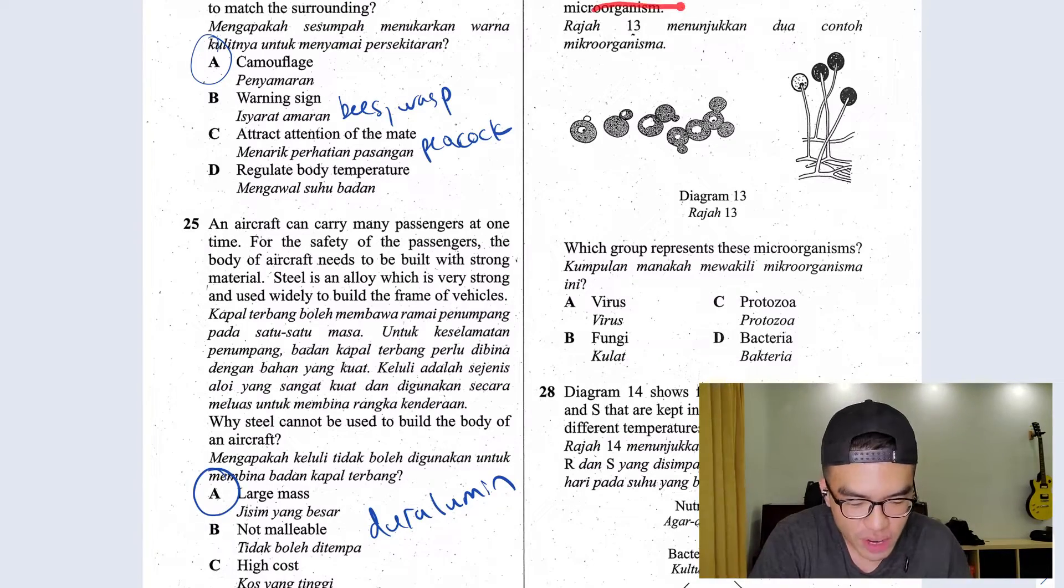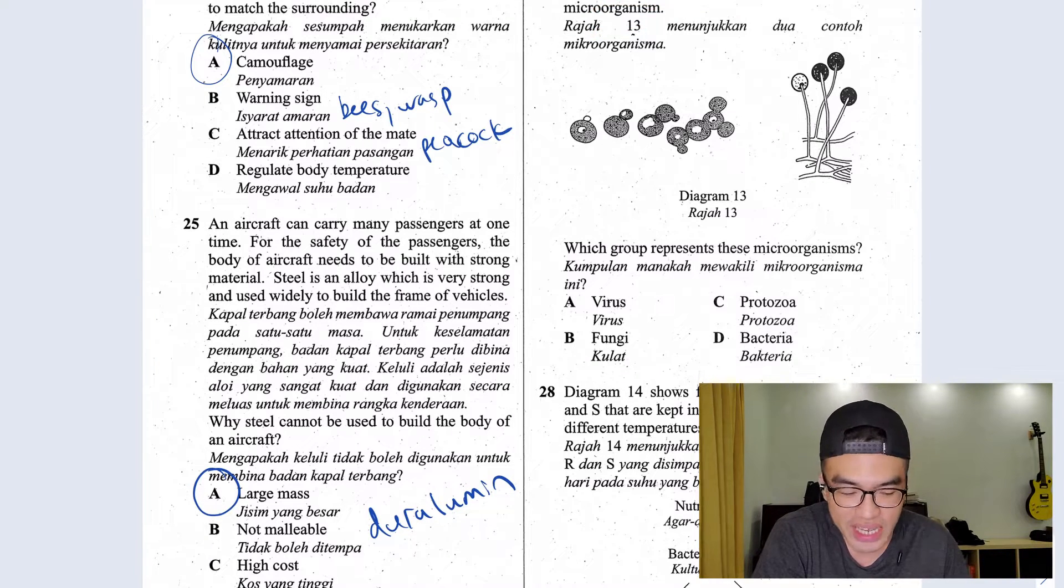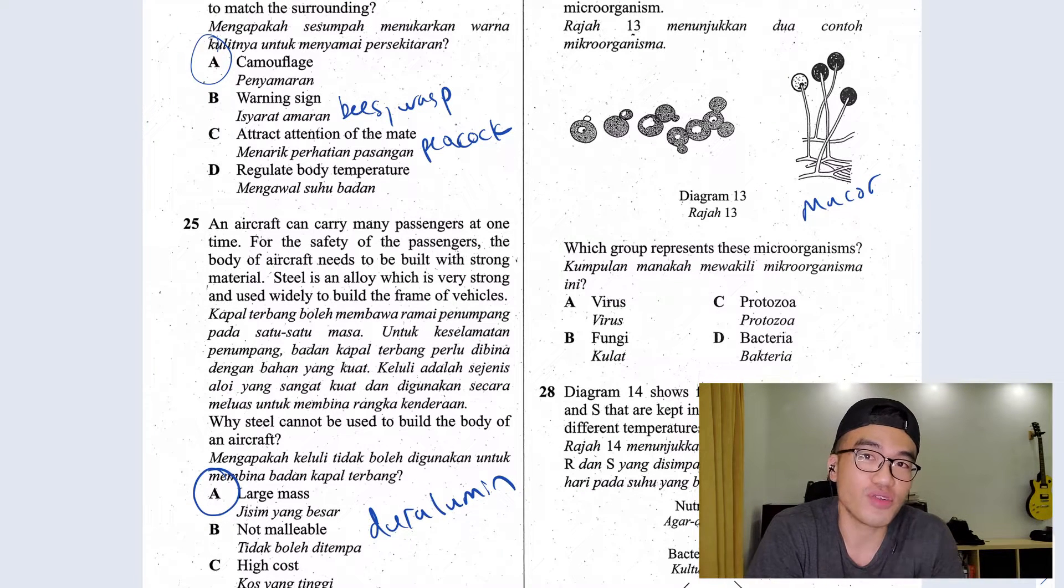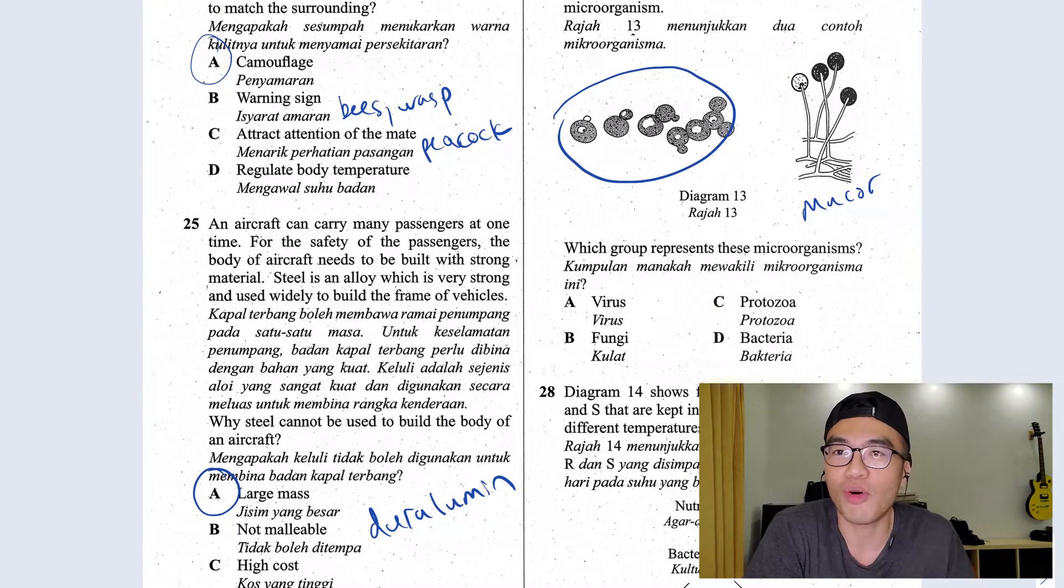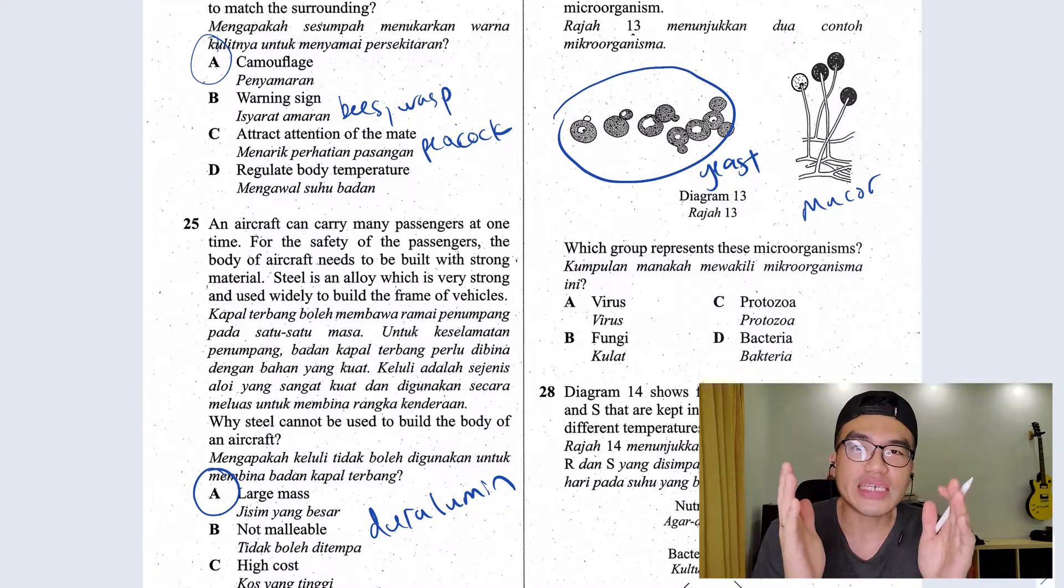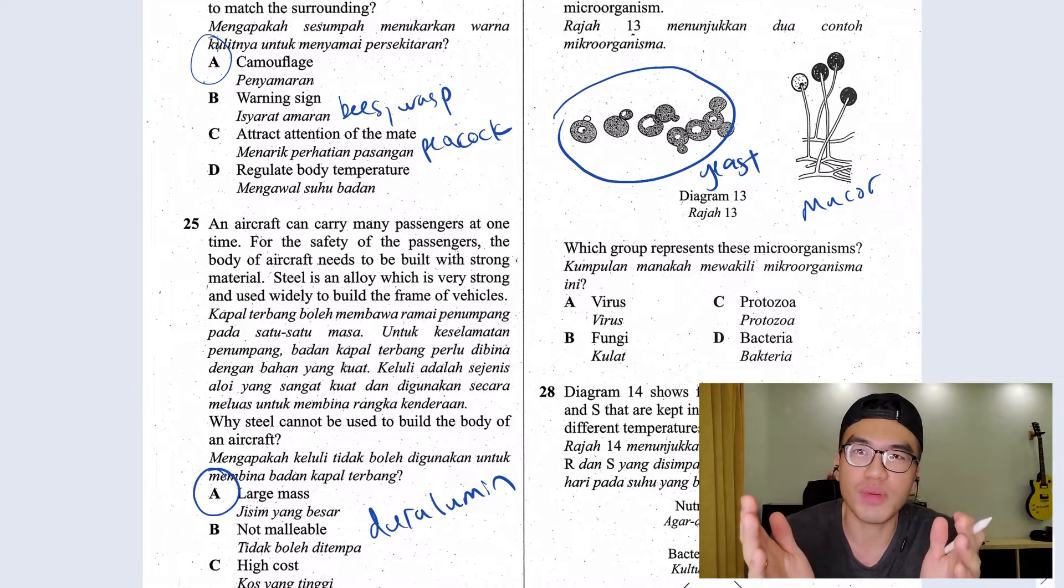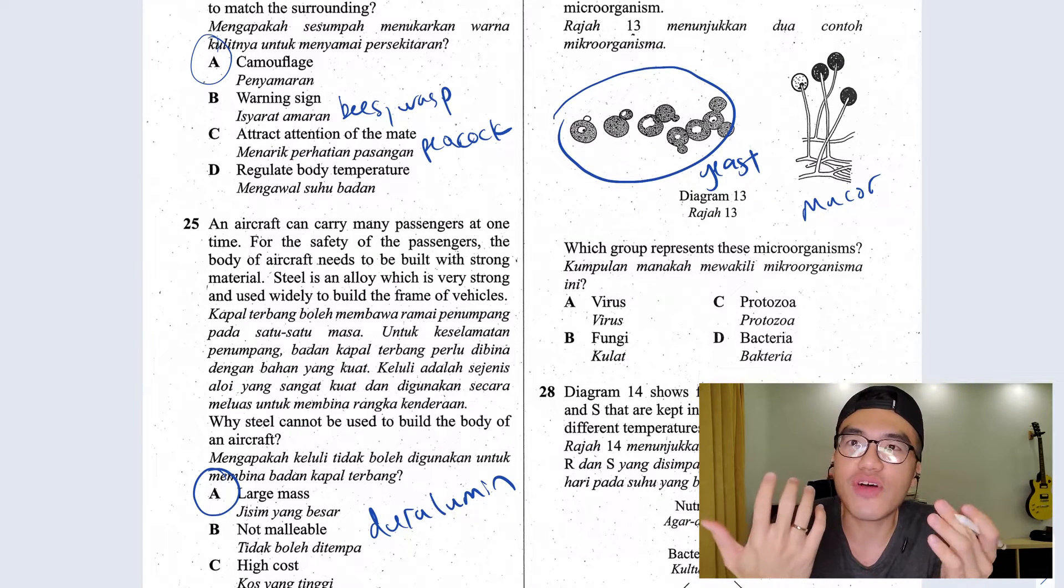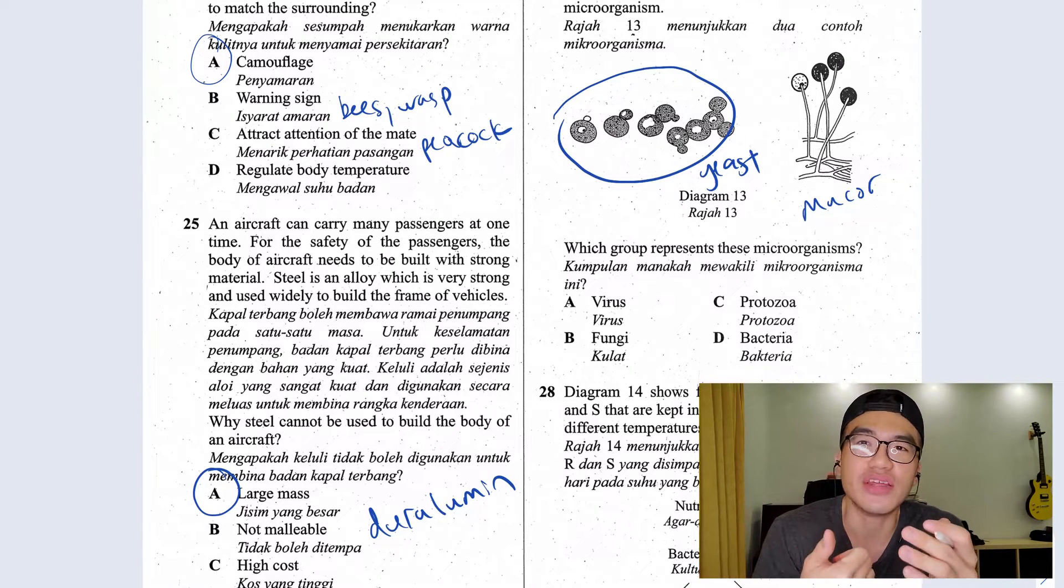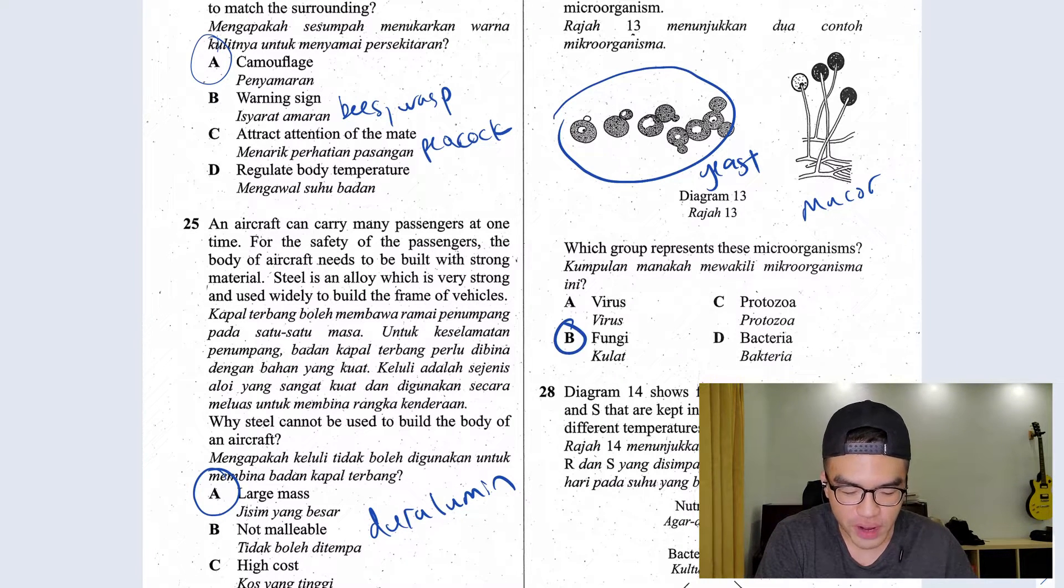Question 27, the diagram shows two examples of microorganisms. As you can see here, this for sure you know is your mildew that you found on your bread. This is the most important thing that you need to recognize. This would be your yeast. Before I move on, yeast is the single most important microorganism that you must remember for your SPM because they are very useful in our industry in making bread and of course alcohol. Yeast and mildew belongs to fungi.